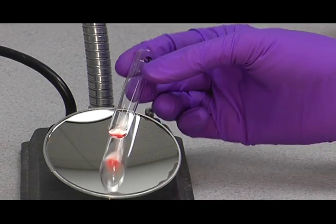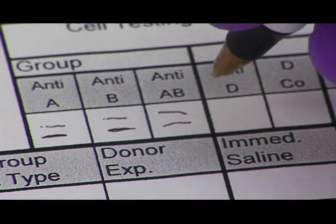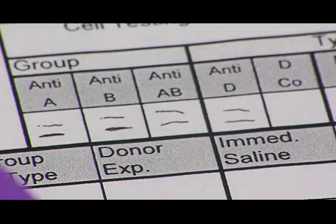You can see that the button now is off the bottom of the tube, and it's a nice smooth reaction. So you see this nice smooth reaction there, that's a nice negative. And record the result for your D-tube.